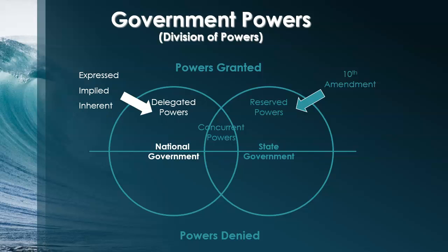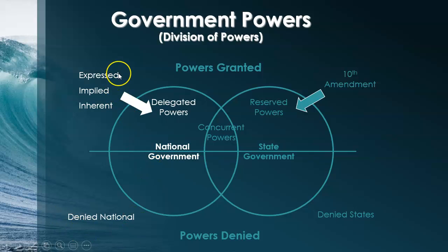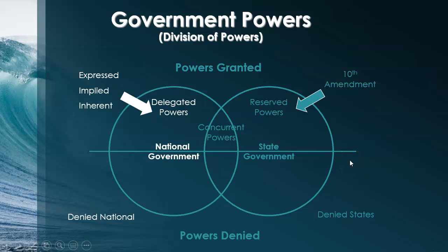There are also inherent powers — think of something that is inherited, something you get just by being born. Governments inherit powers from other governments, like the power to determine who can enter the country and who can become a citizen. The reserve powers come from the 10th Amendment. Powers denied to the national government include anything not specifically mentioned in the Constitution and not part of the implied or inherent powers — that's the idea of limited government. Powers denied to the states include things like coining money and declaring war; states can't infringe on the powers of the national government.